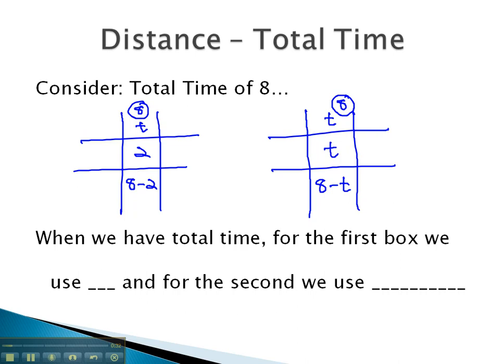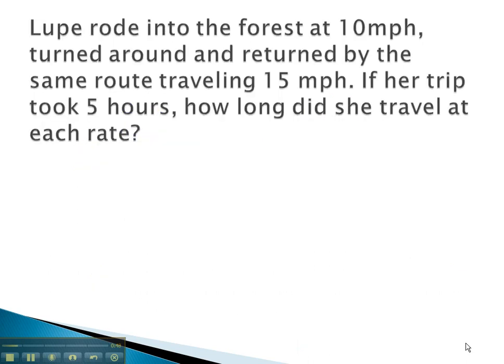As you see, when we have total time, for the first box under time, we will use t, and for the second, we will use total minus t. The order of subtraction is very important, so we must make sure we're subtracting the total minus the t.